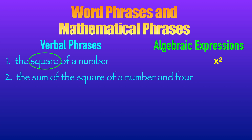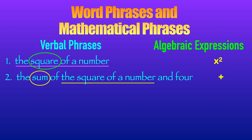Number two: 'the sum of the square of a number and four.' The key clue here is 'sum,' which means addition. We add the square of a number — which we already translated as x squared from number one — and four. So when you translate 'the sum of the square of a number and four,' the answer is x squared plus four.